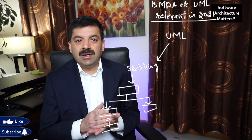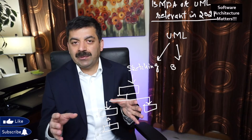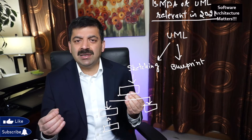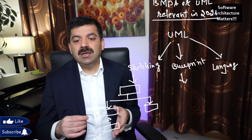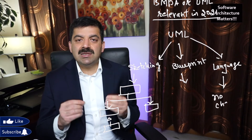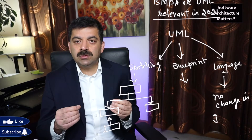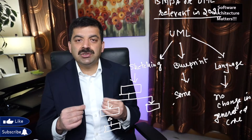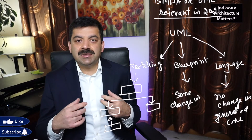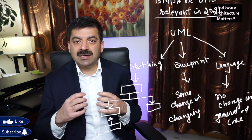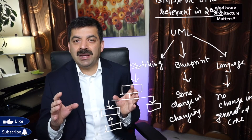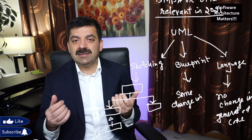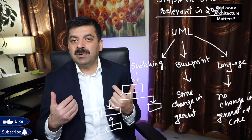UML can be a sketching tool, a blueprint, or a language. If you can generate your business layer or business model using the tool without any modification, then UML is a language. If you can generate some code but have to modify it, then it's a blueprint. If you are just using it for sketching — just building diagrams for communication — then you are using it as a sketching tool. I think it has become more popular as a sketching tool.